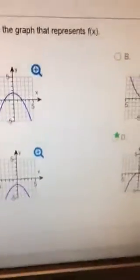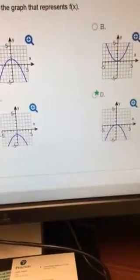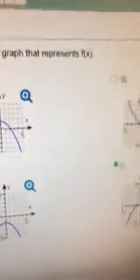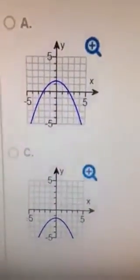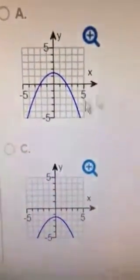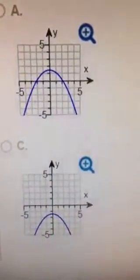Now what they want us to do is they want us to select which graph this would be. Since this has a negative in front, we know that it opens down. So that means it's going to be one of these three right here. But what I'm going to do is notice my window on all these are a five by five.